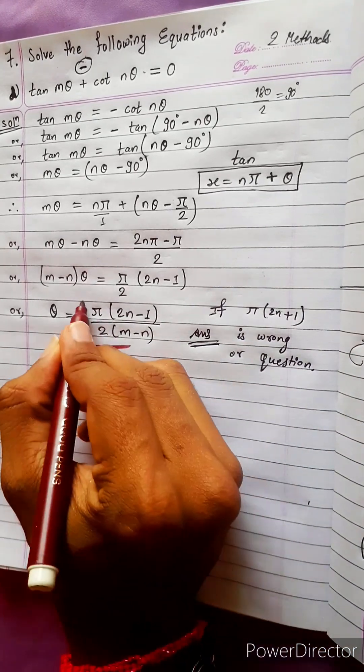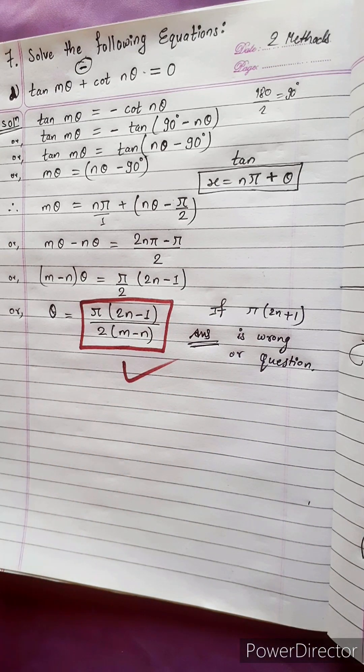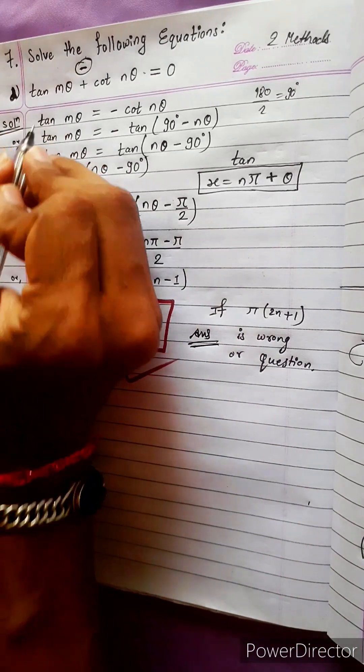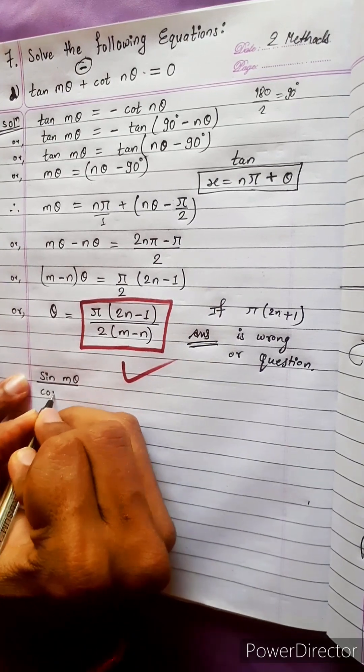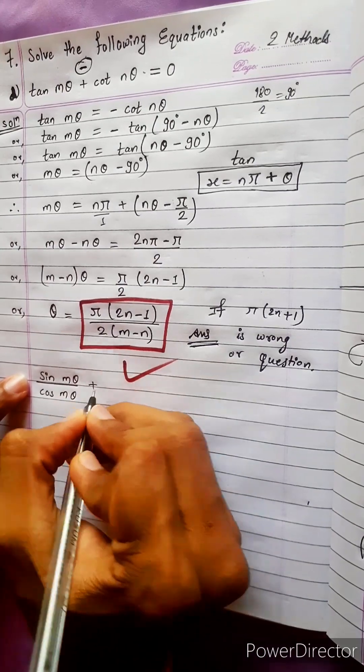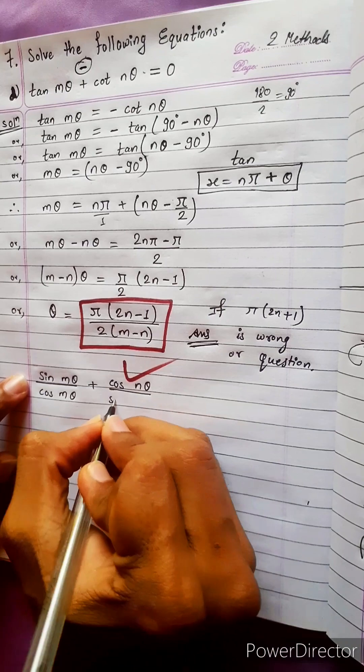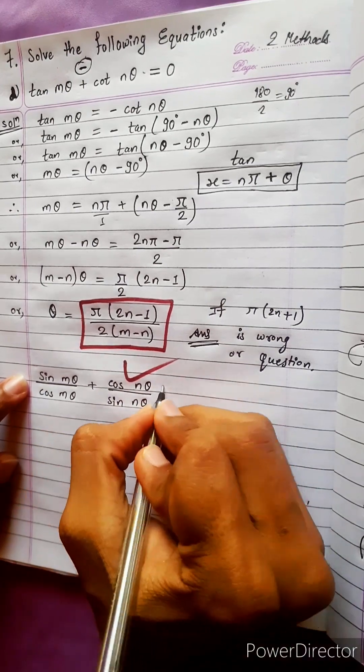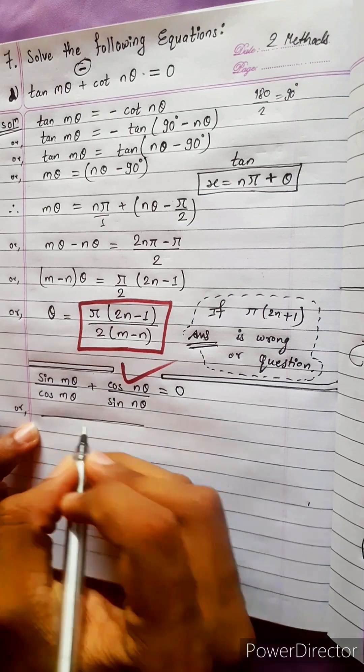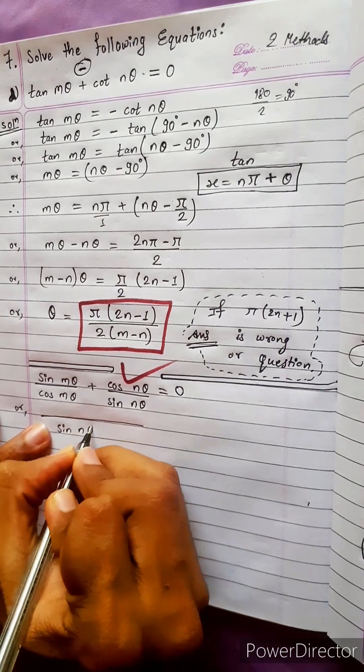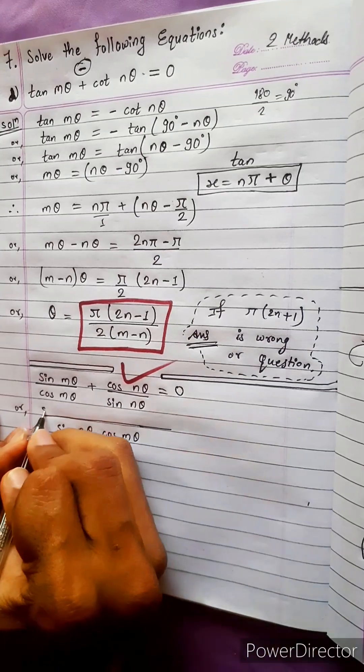Now let's do by another method. Another method is by using sine cos. In place of tan we write sine m theta by cos m theta plus cot means cos by sine n theta equals to zero.